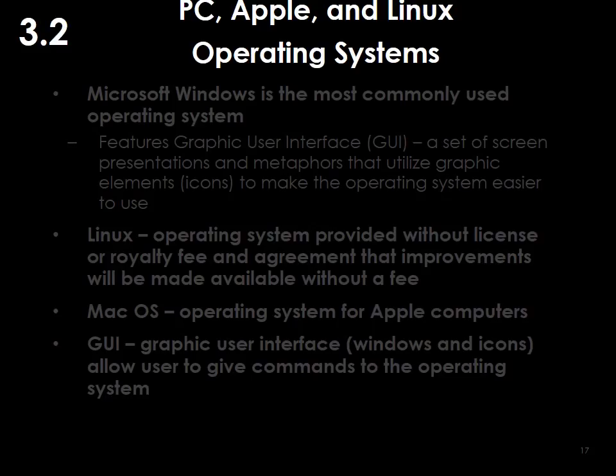PCs, Apple, and Linux operating systems. Linux is provided without license — it's royalty free and a lot of companies in Europe use it, though not many large corporations or law firms in the United States. Most law firms use Microsoft Windows. The graphical user interface, or GUI, means most people now use a mouse and click on icons. In the previous era it was all menu-driven with keystrokes and no mouse at all — those days are gone.